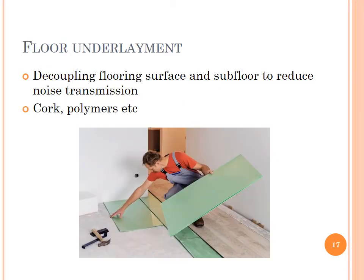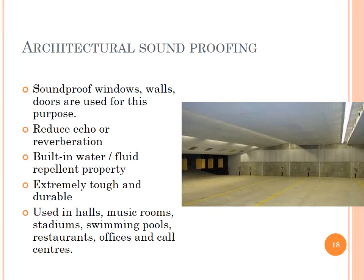Floor underlayment involves decoupling of the flooring surface and subfloor to reduce noise transmission. Cork, polymers etc. are used. Architectural soundproofing uses soundproof windows, walls and doors. They reduce echo and reverberation.